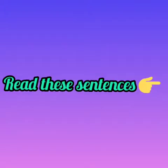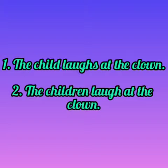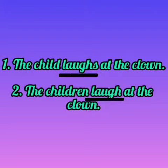Let's read these sentences. The child laughs at the clown. The children laugh at the clown. In the first sentence, the verb is 'laughs' — L-A-U-G-H-S. 'Laughs' is a singular verb because the subject 'child' is a singular subject. In the second sentence, the subject is 'children,' which is a plural noun, so the verb also changes to a plural verb: 'laugh' — L-A-U-G-H.